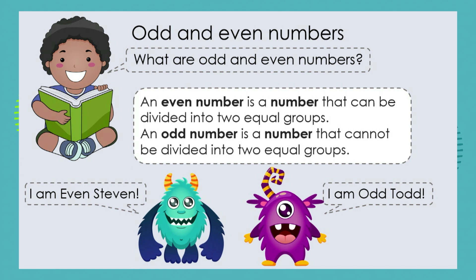So what are odd and even numbers, grade ones? Well, an even number is a number that can be divided or put into two equal groups. An odd number is a number that cannot be divided or put into two equal groups. Remember, Even Stephen and Odd Todd are going to help us understand these numbers a bit better.